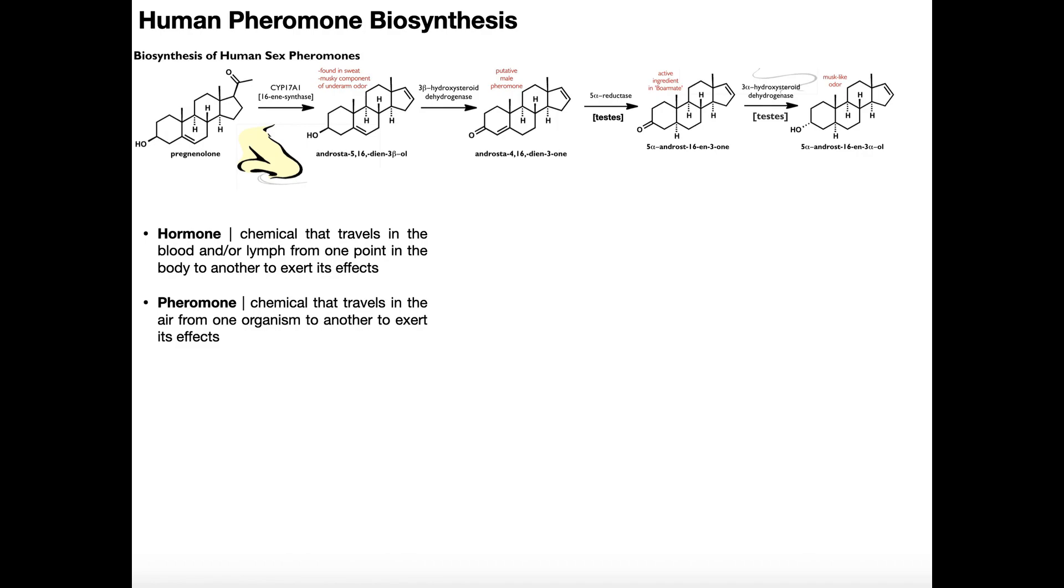Now, if you're the ovaries, you're not going to go this direction. You're going to take this androstadienone and go down like this. And the enzyme here is called aromatase. We also saw that in steroidogenesis. Aromatase formed estrogens from androgens. So interesting note, females make a lot of androgens. They just convert most of them to estrogens. And it's the same here with the pheromones.